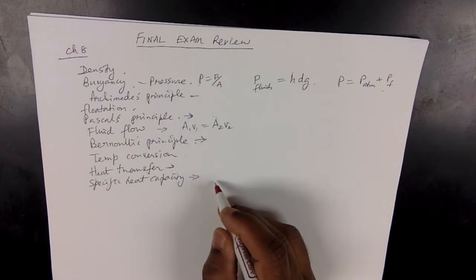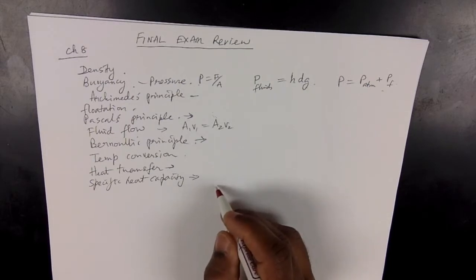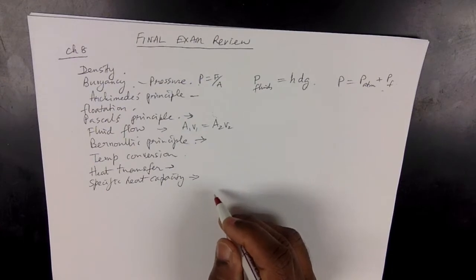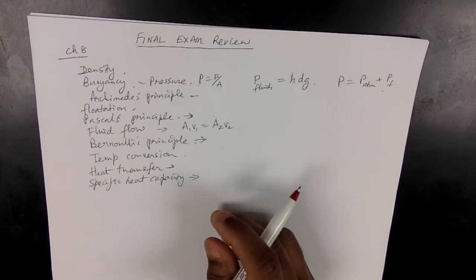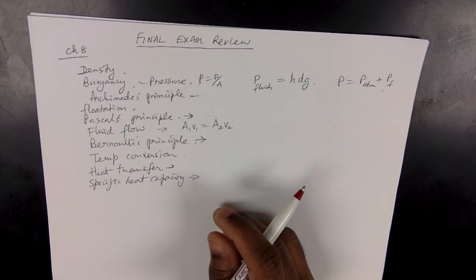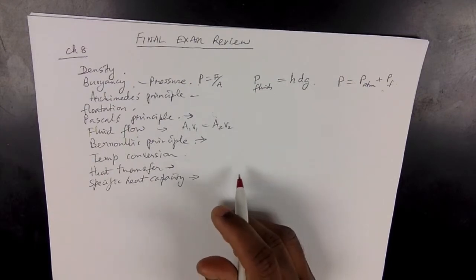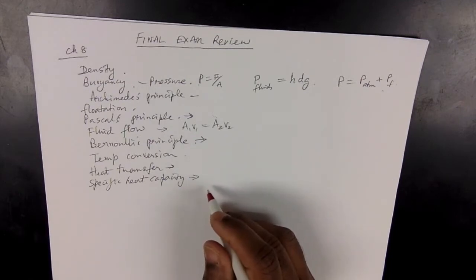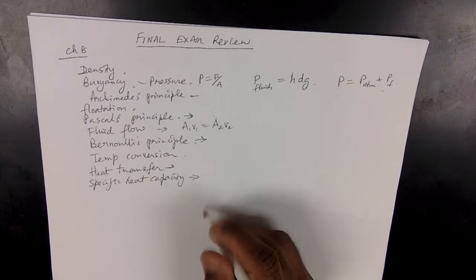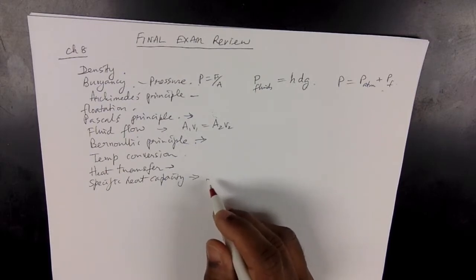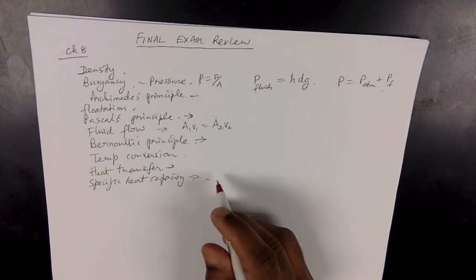Different materials have different specific heat capacities. Those things are mentioned in your textbook on page 314, where you can see a list of specific heat capacities. Among all substances, water has the highest specific heat capacity — that's why it is used as a coolant in radiators. That is the information you need to know about thermal physics.